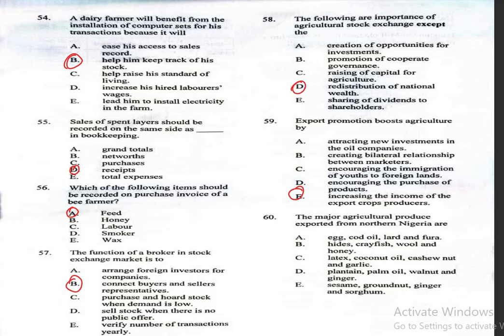Question 60: The major agricultural produce exported from northern Nigeria are A, egg, cod oil, lard and fora; B, hides, crayfish, wool and honey; C, latex, coconut oil, cashew nut and garlic; D, plantain, palm oil, walnut and ginger; E, sesame, groundnut, ginger and sorghum. The correct answer is option E. Thank you for staying with me.